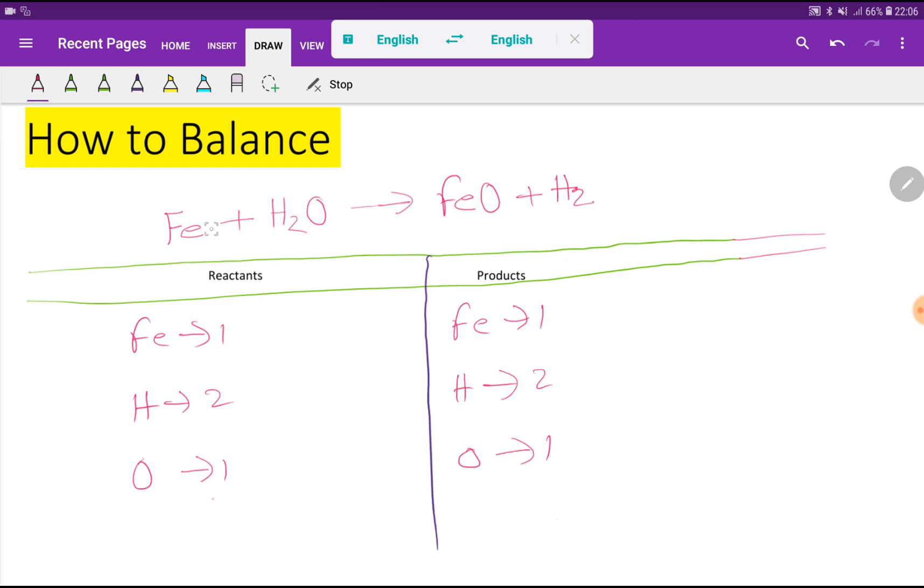To balance this reaction means we have to balance the number of iron, hydrogen, and oxygen from both sides. On the left hand side iron is 1, on the right hand side iron is 1, so iron is balanced. Hydrogen: 2 and 2, balanced. Oxygen: 1 and 1, balanced.